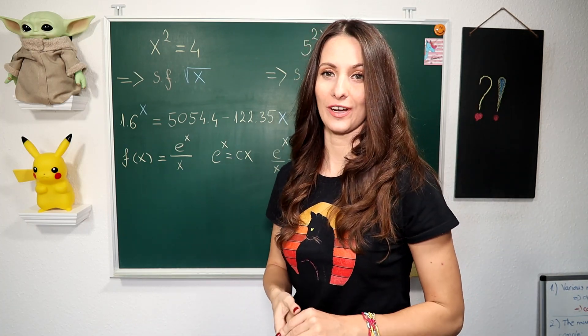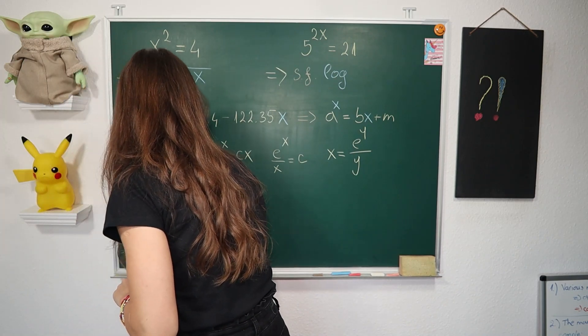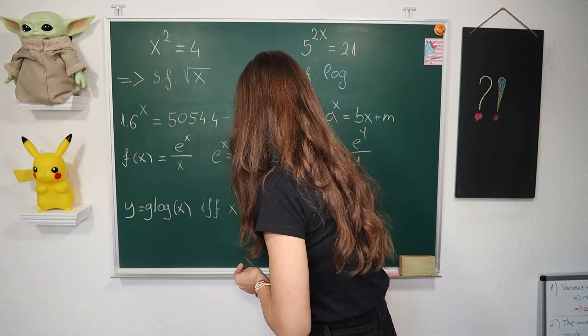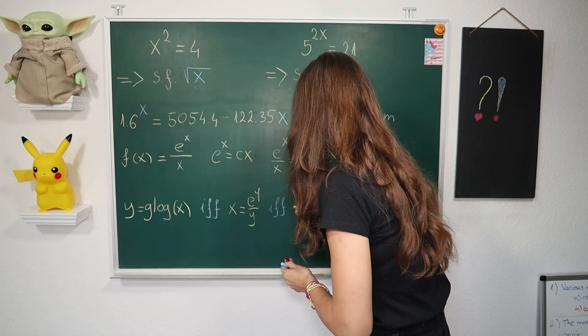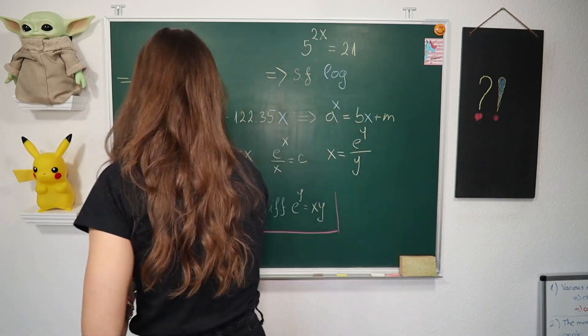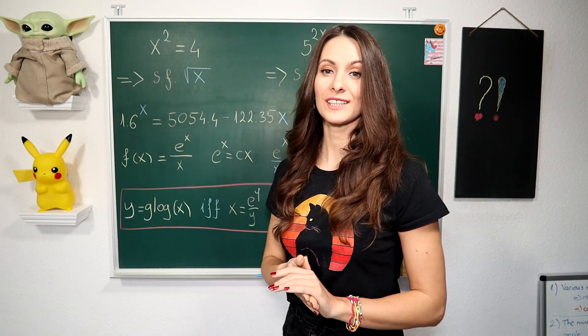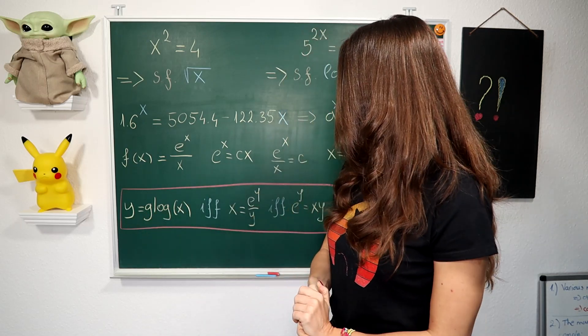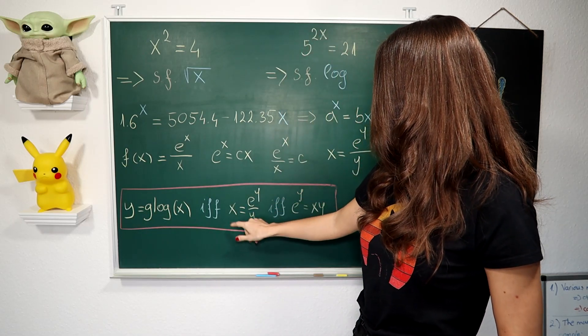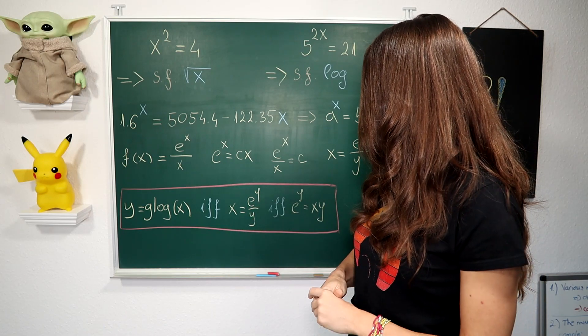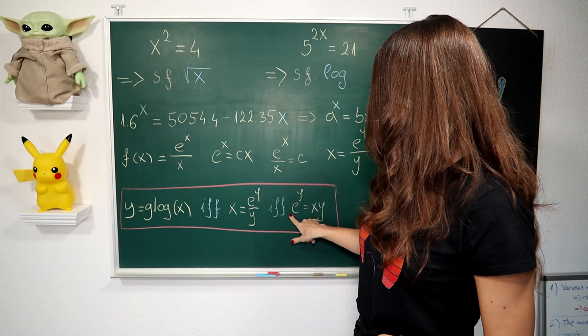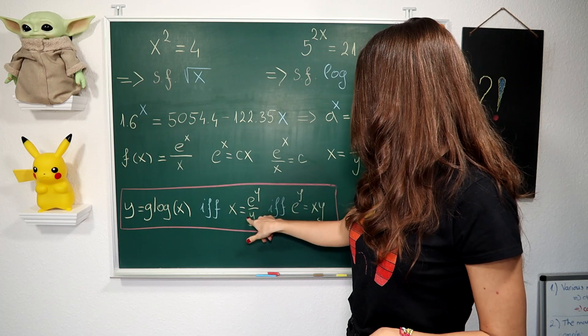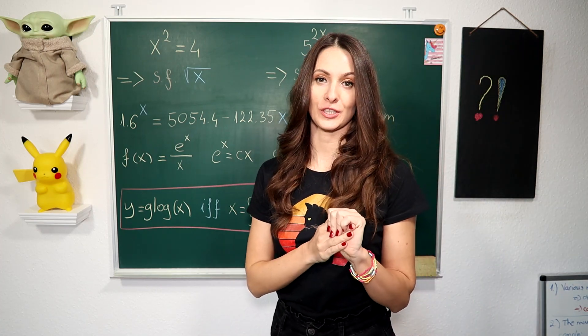Now let's define our g-log function. This is the definition: y = glog(x) if and only if x = e^(dy)/y if and only if e^(dy) = xy. So this is our definition.